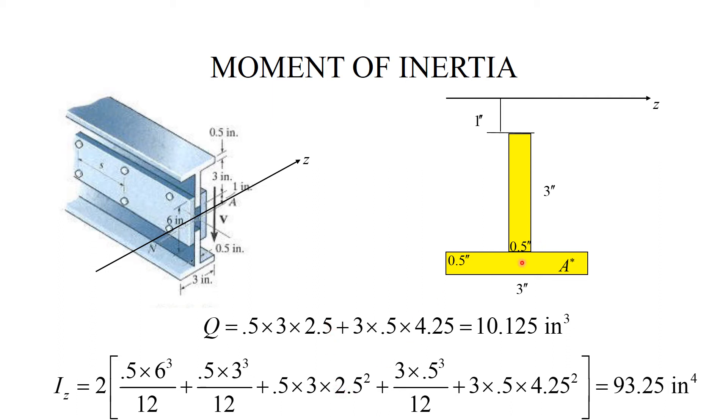For the lower rectangle, 3 times 0.5 cubed over 12, that's the moment of inertia about the axis going through the centroid of this flange, plus 3 times 0.5 times 4.25 squared. And I get 93.25 inches to the fourth.